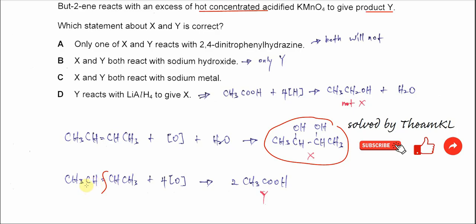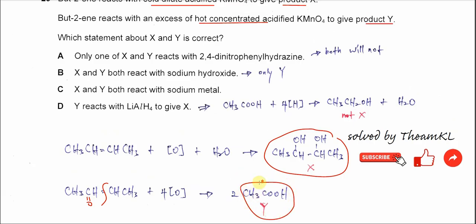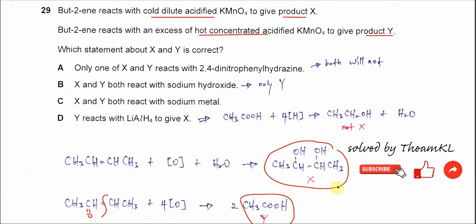So first, these carbons will insert one oxygen to form ethanol. And after that, it will insert another oxygen in between the C-H to form ethanoic acid. So it will form this ethanoic acid as product Y. So now we know the product X and Y already. Let's move back to this statement. Which statements about X and Y is correct?